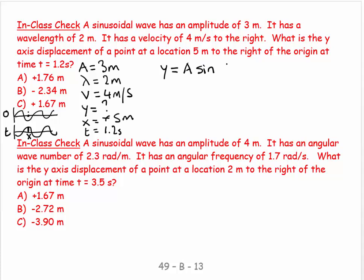What I say is that my y value is equal to A sine. It's going to be 2π over λ. And it's going to be x. It's traveling to the right, so it's minus vt. And so I say, well, y equals A which is 3, sine 2π over λ, and λ is 2. And this is x, x is 5, minus v, and v is 4, times t, 1.2.